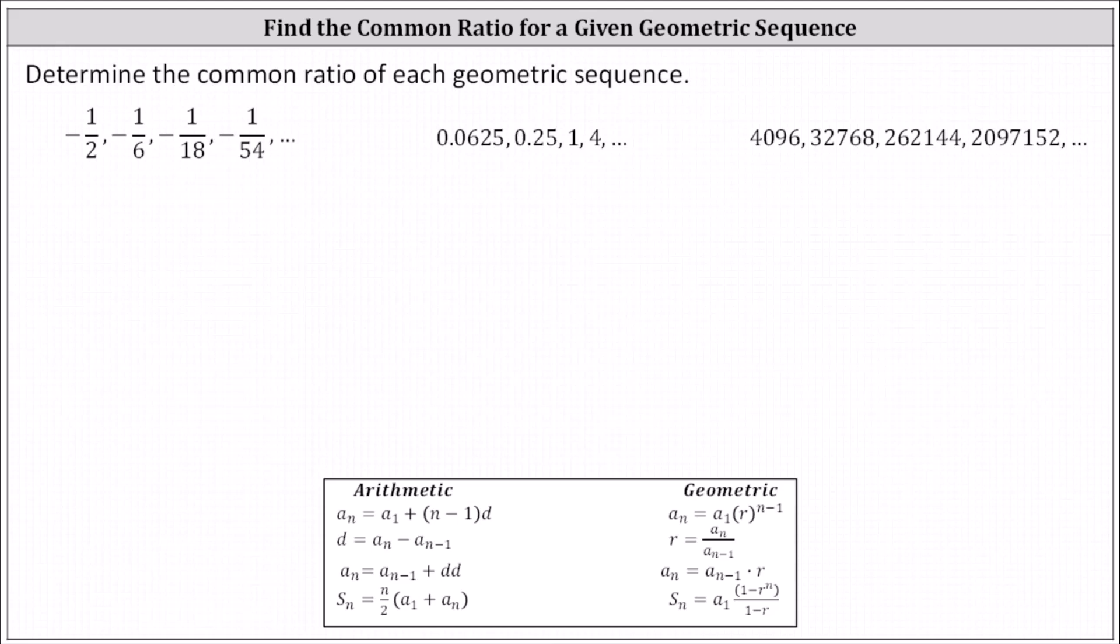Determine the common ratio r of each geometric sequence. Because we know each sequence is geometric, we can determine the common ratio r using the formula r equals a sub n divided by a sub n minus one, which means we can select any term in the sequence and divide by the previous term to determine the common ratio r.